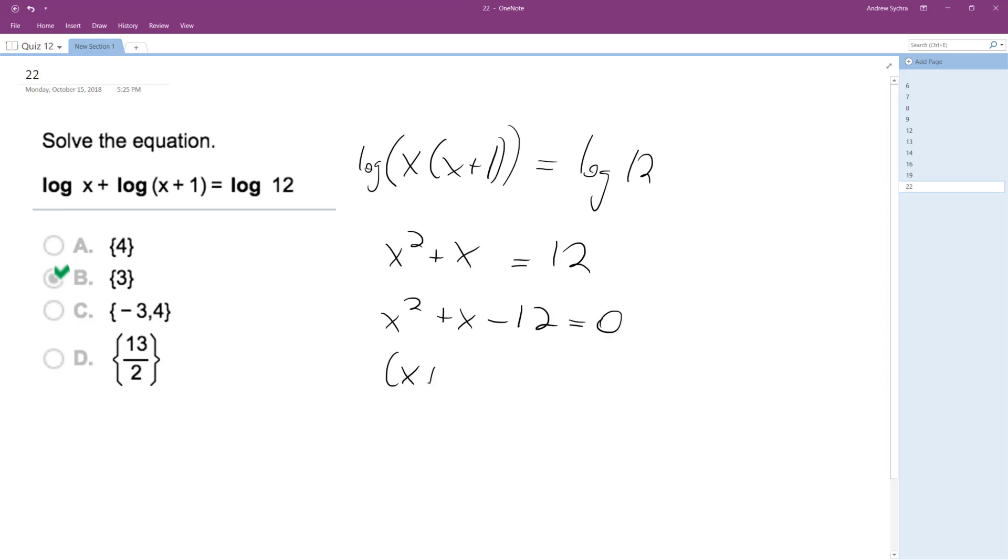We get x plus 4 times x minus 3 equals zero. So from this right here, x equals negative 4 and 3, but we've got to be careful here.